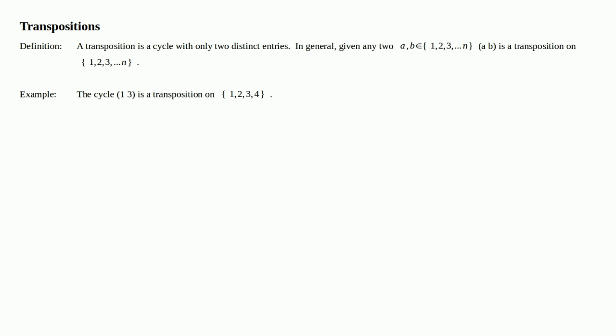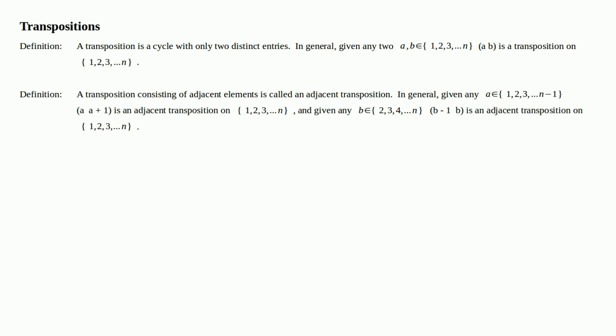Next, a definition: a transposition consisting of adjacent elements is called an adjacent transposition. In general, given any a in the set 1 through n minus 1, the cycle (a, a+1) is an adjacent transposition in the set 1 through n because they're right next to each other.